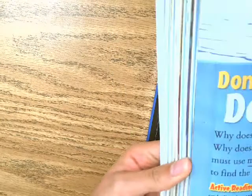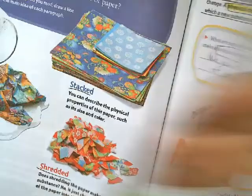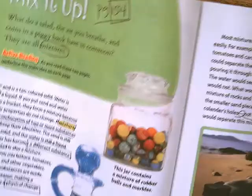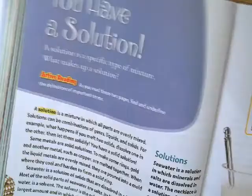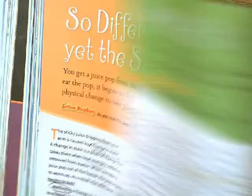We covered one more page in Science Fusion. We went over some of the physical changes that paper can go through, how melting, pouring, and molding are also physical changes, and how mixtures are physical changes. Tomorrow we'll go over solutions and cleaning up an oily mess. This starts on page 149 of our Science Fusion book.